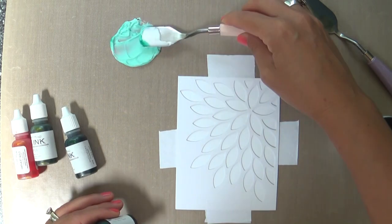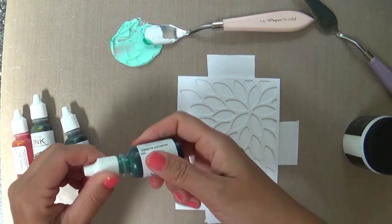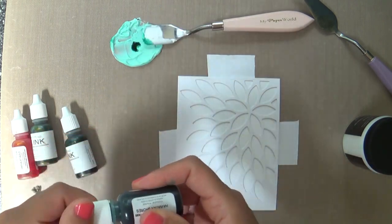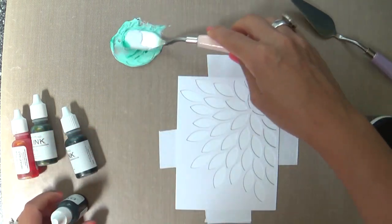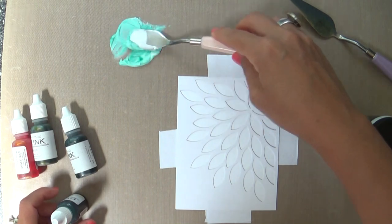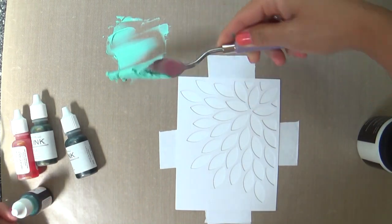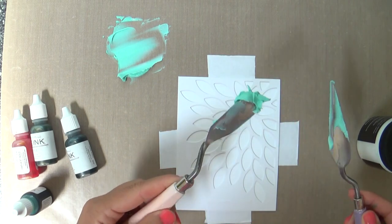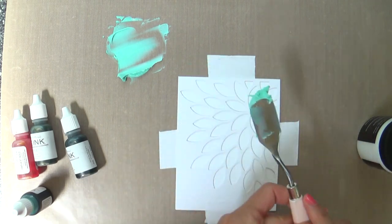And so now once you get that all mixed up I am using these palette knives that I got from Simon Says Stamp but before that I just used old gift cards and credit cards and stuff like that so you can definitely make do with what you have around the house. Okay so now I'm using my palette knife to kind of work that together.